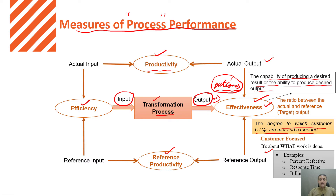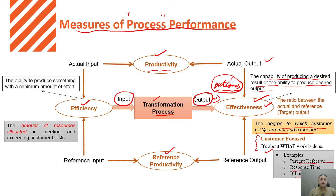The effectiveness perspective is the customer angle — it is about what work is done, which means the percentage of defective units, response time, billing accuracy from the billing process perspective. Now, efficiency is the ability to produce something with the minimum amount of effort. Efficiency is directly related to your resources — man, machine, energy. The efficiency concern is with respect to the activities of the process which we are using to convert the input to output, as well as the resources we are using.